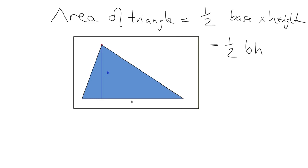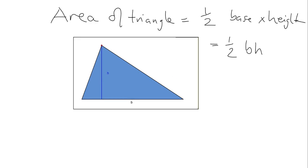The reason the area is half bh is because this triangle — and this is what I want to show you — can be cut up, and if I put two copies of those pieces together, it'll actually make a rectangle. So this triangle is just half of a rectangle. I'm going to cut this triangle here, make a copy of this piece and put it there, and make a copy of this piece and put it there, and it'll make a rectangle.